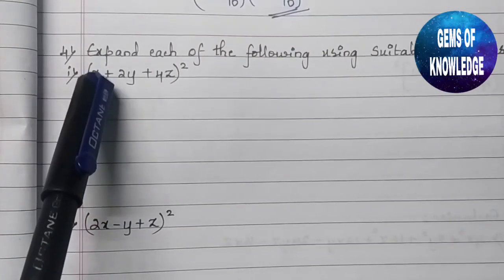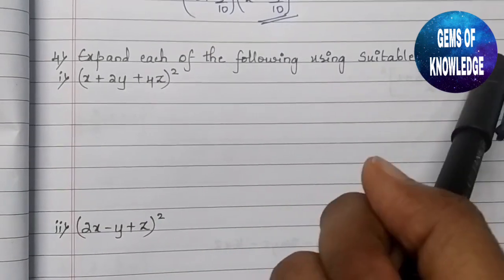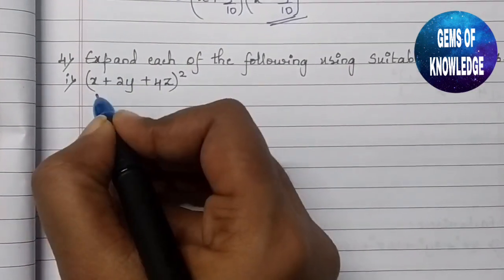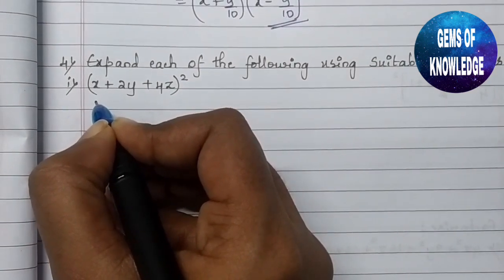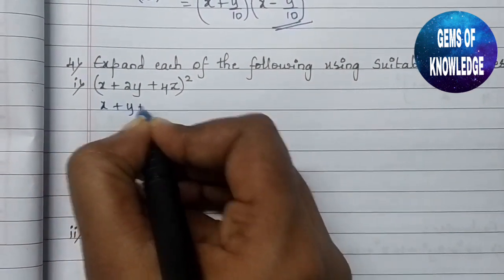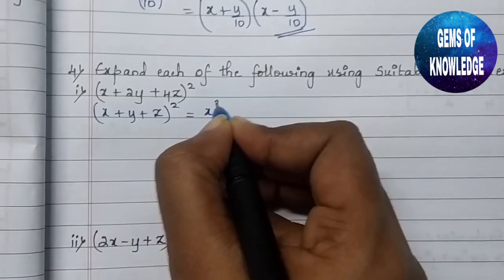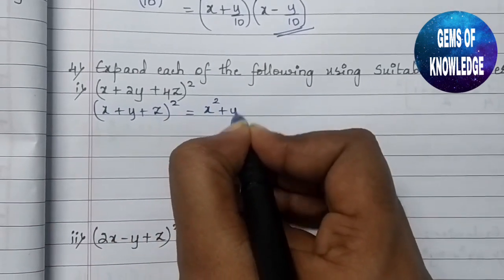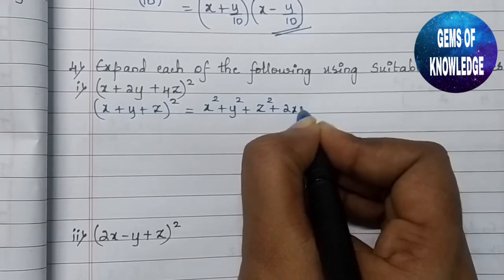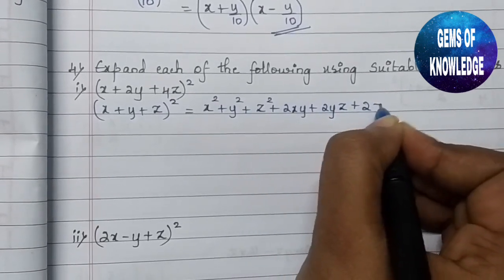The next question is number four: expand each of the following using suitable identities. The first question is in the form of the fifth identity, that is (x + y + z)² = x² + y² + z² + 2xy + 2yz + 2zx.